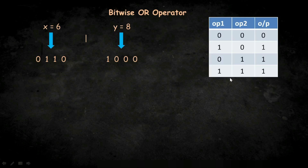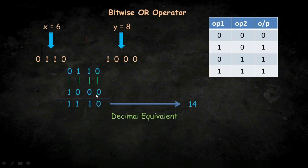Our next bitwise operator is the OR operator. Here we have the table for the OR operator. Note that we will get zero as output if and only if both the operands are zero, otherwise we will get one. For example, if we want to perform the bitwise OR operator on six and eight, the operation will be performed on each bit.